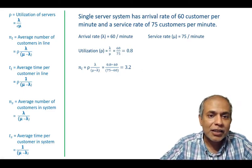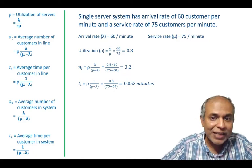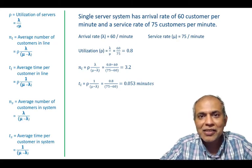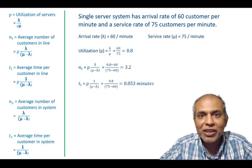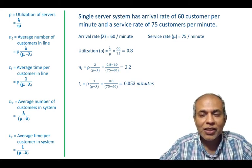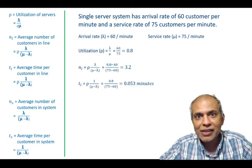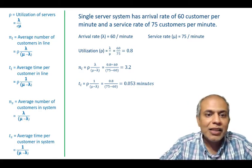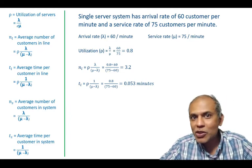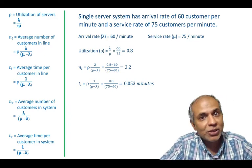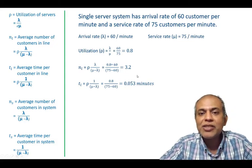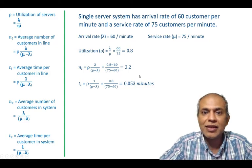And the time that these customers spend waiting in the line, again just a simple and direct application of the formula is 0.053 minutes that the customers have to wait. Now it's important to note here since the arrival rate is in customers per minute, the time that the customers have to wait in the line is also in minutes. So if the arrival was in hours or customers per hour this number would have been in hours. So customers on average wait 0.053 minutes in the line.